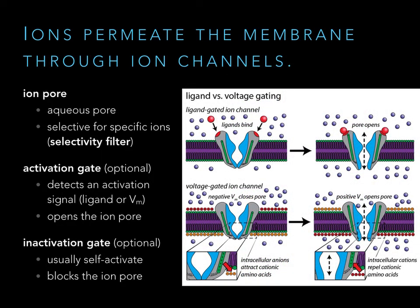Activation gates come in two flavors. They can be ligand-gated, where the binding of some small molecule opens the ion pore — if you look at the top, that ligand-gated ion channel after the ligand binds has its activation gate pull open the ion pore and ions can move through. What we'll be talking about in the next lecture are voltage-gated ion channels that respond to a change in membrane potential.